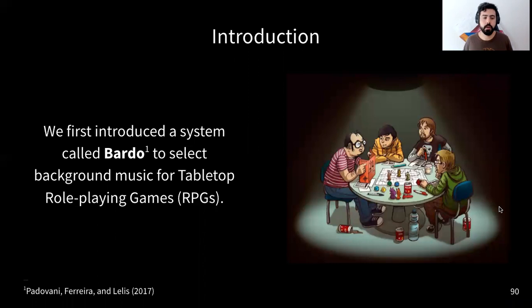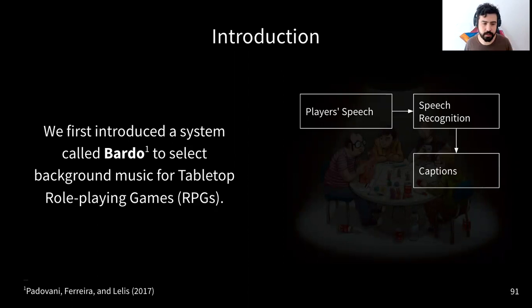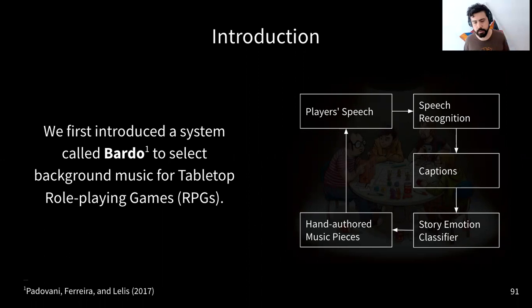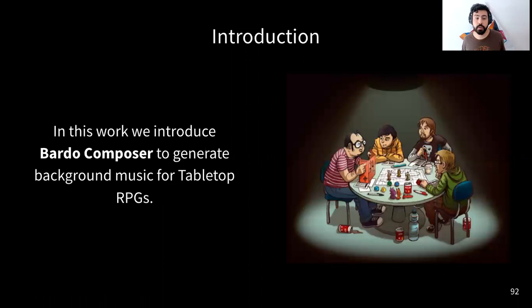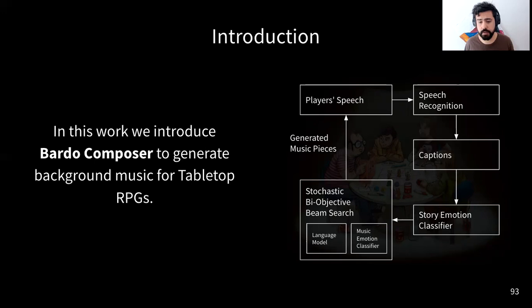In this work, we first presented Bardo, a system that selected background music for tabletop role-playing games. It takes the players' speech at the table, sends it to a speech recognition system that generates captions, which are classified by a story emotion classifier. We then have a pool of music annotated according to emotion and pick pieces matching the classified emotion. We then introduced Bardo Composer, which generates background music instead of selecting it, using a new algorithm called Stochastic Bi-Objective Beam Search to control a language model with a music emotion classifier.